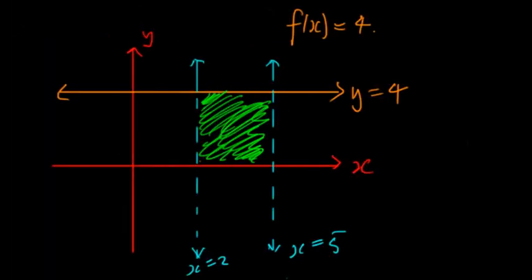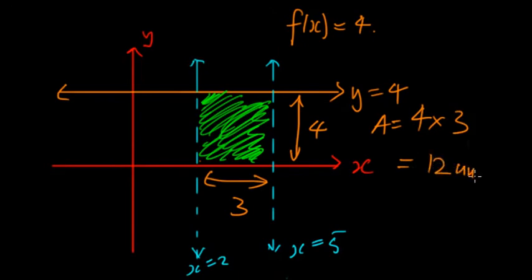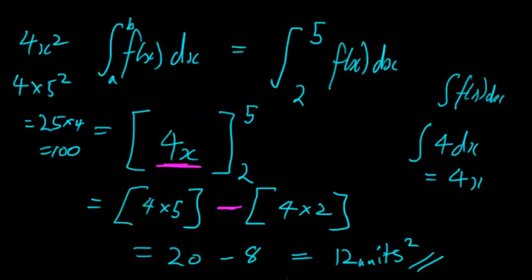So this area here will be 12 units squared. Now, because this is a straight line, we could just make a square and calculate it. The width is 5 minus 2, which is 3, and the height is 4. So the area is width times height: 4 times 3, which equals 12 units squared. We got the exact same answer using the geometric method and the integration method.